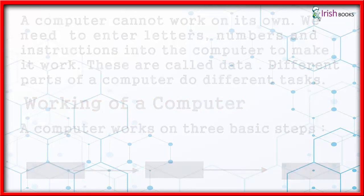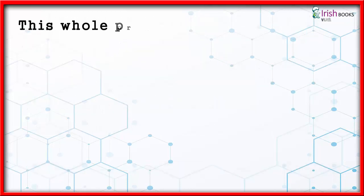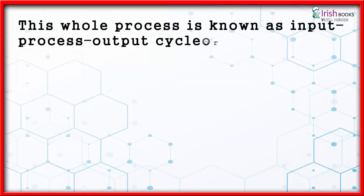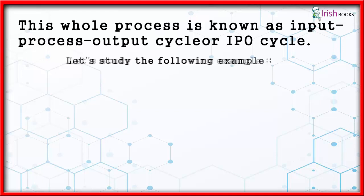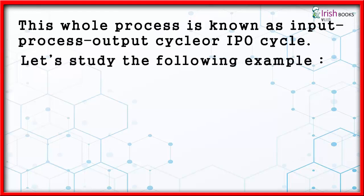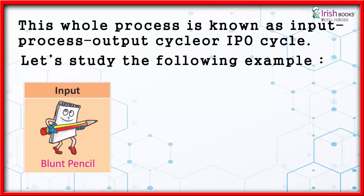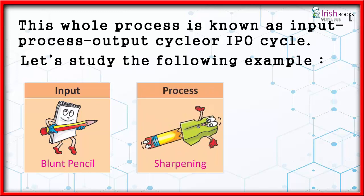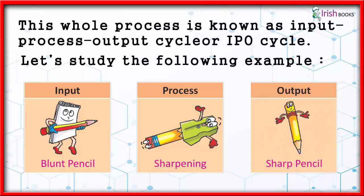This whole process is known as the input-process-output cycle, or IPO cycle. For example: Input — blunt pencil; Process — sharpening; Output — sharp pencil.